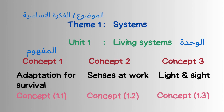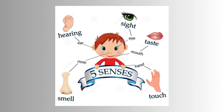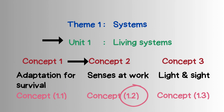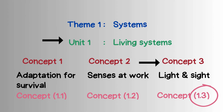Concept two talks about senses — you know the five senses — which are sight, hearing, touch, smell, and taste. All living organisms have these senses. Concept three talks about light and sight, one of the five senses. We refer to Unit 1, Concept 1 as 'Concept 1.1.' So if we want to refer to Unit 1, Concept 2, we write 'Concept 1.2,' meaning Unit 1, Concept 2. And 'Concept 1.3' means Unit 1, Concept 3.